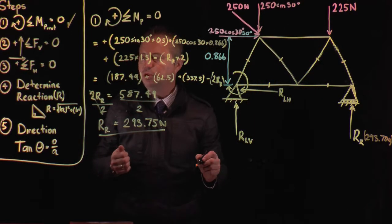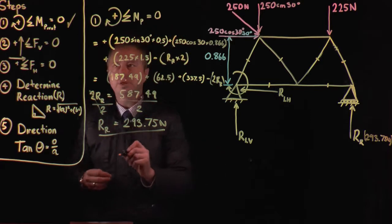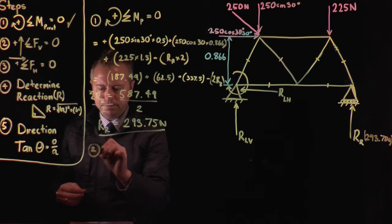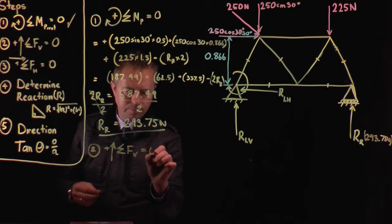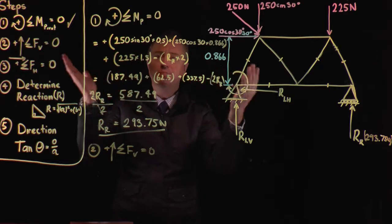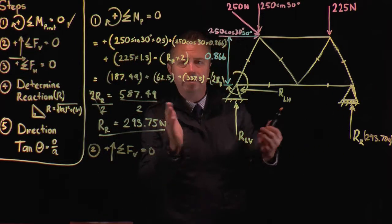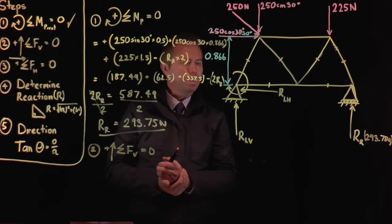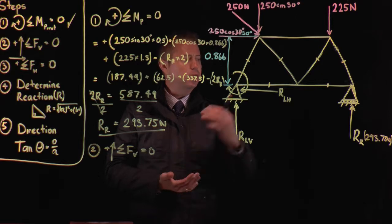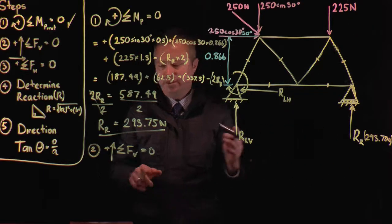The next bit we need to move on to is our sum of the forces vertical. So we'll come down here. We'll do step two. And we say that everything that's going up, so sum of the forces vertical, everything that's going up is positive. So again, working either from left to right or right to left. It's up to you what you like to do. We can solve this. So let's work from right to left in this instance. So our first one is going up.